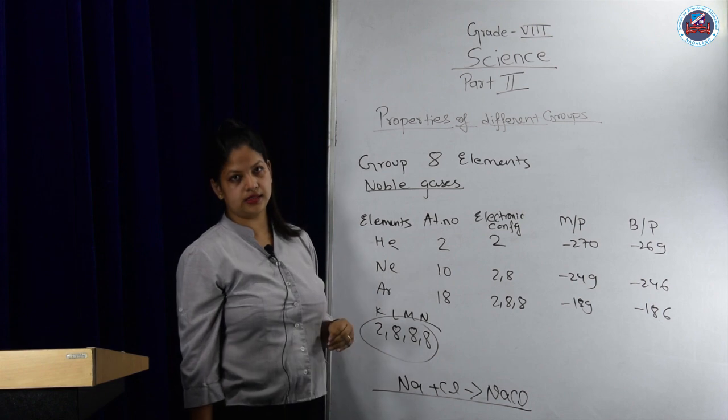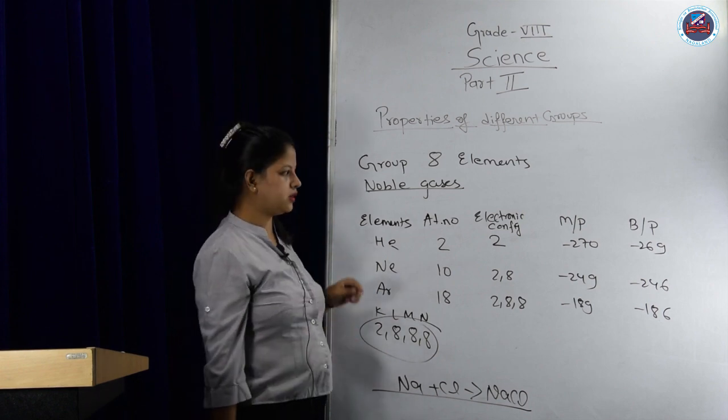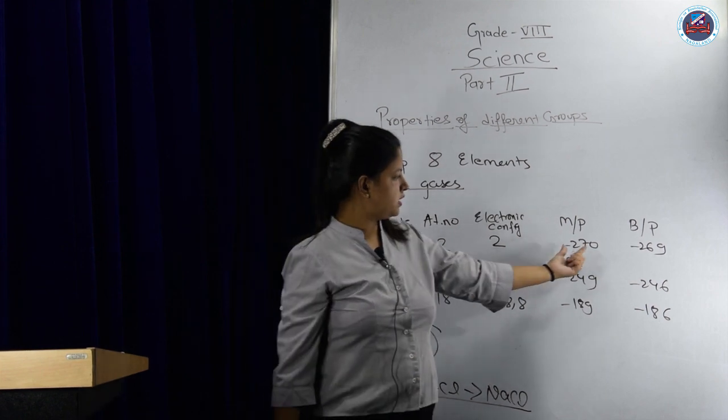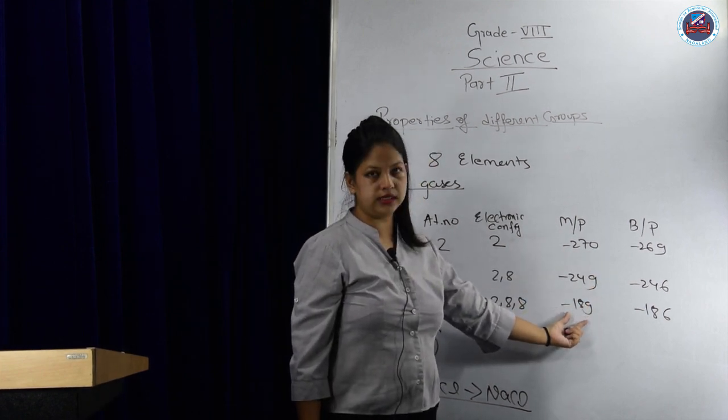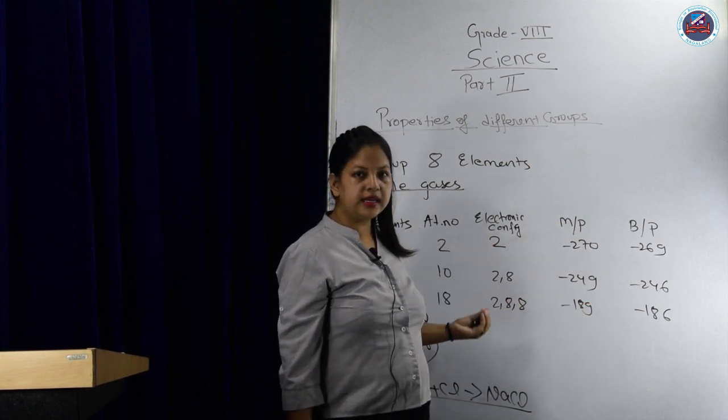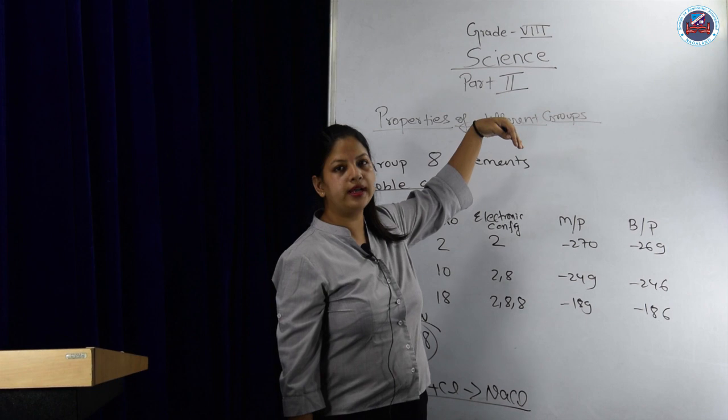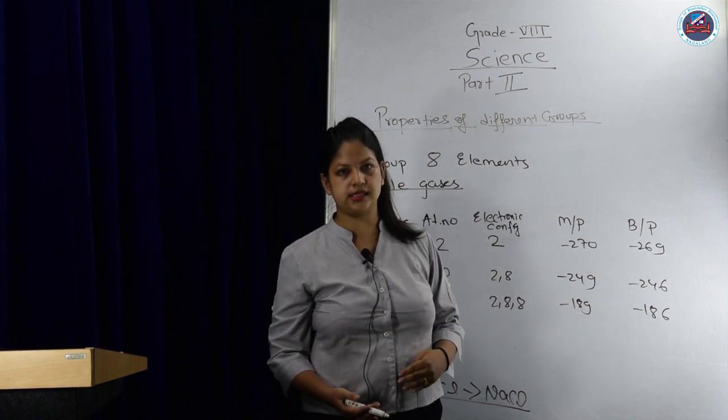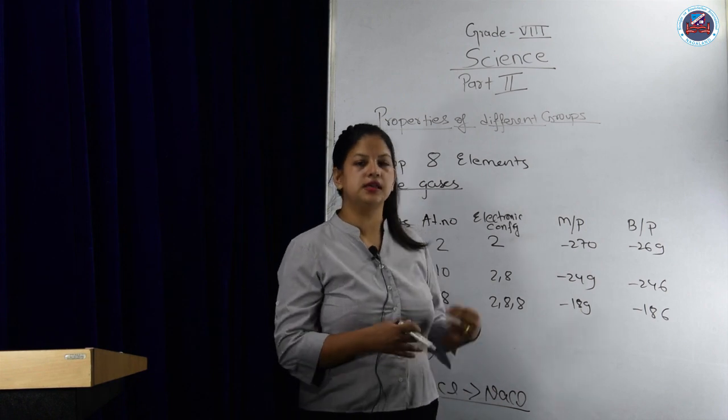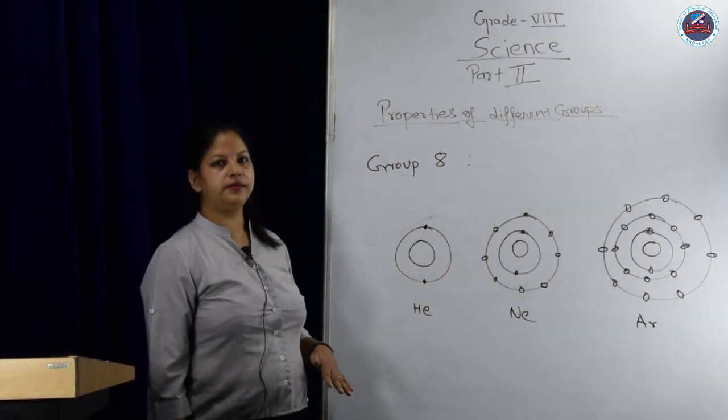Their melting points are -270, -249, -189. So it is increasing - for noble gases, melting point increases down the group, like halogens. Boiling point also increases like halogens.